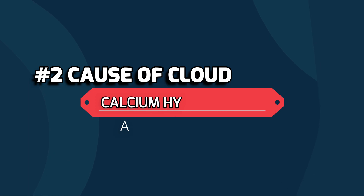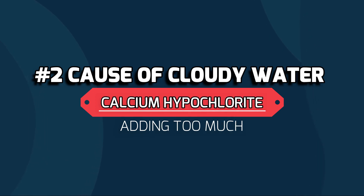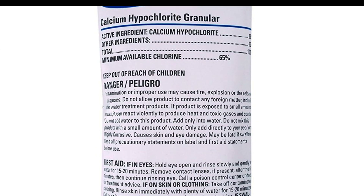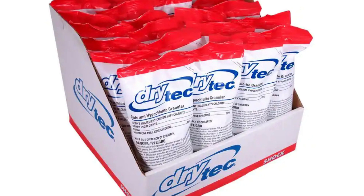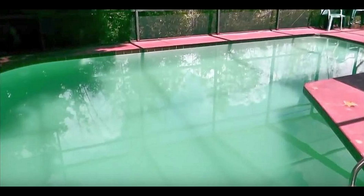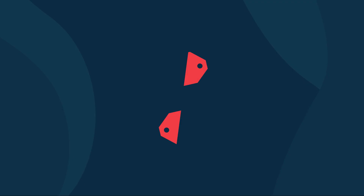Number two is the overuse of calcium hypochlorite. This kind of chlorine works really well for weekly maintenance, but as the name implies, it does contain calcium, and overuse and shocking too often can cause the water to become cloudy. If you need to shock your pool, it's best to use liquid chlorine.